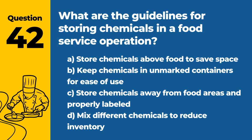Question 42. What are the guidelines for storing chemicals in a food service operation? The answer is C: Store chemicals away from food areas and properly labeled. Proper storage prevents accidental contamination and ensures safe handling.